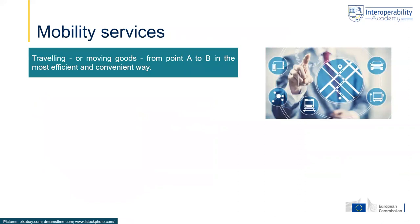The building permit example showed the added value of location enablement for one single service. We also want to show one example of a series of services in the domain of mobility, where it is all about moving people or goods from point A to point B in the most efficient and convenient way. This is in fact a series of public services — not only about providing and receiving information from the government, but really about citizens wanting to travel from one place to another.